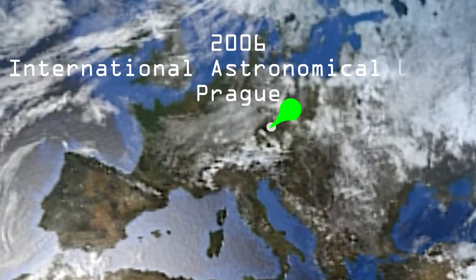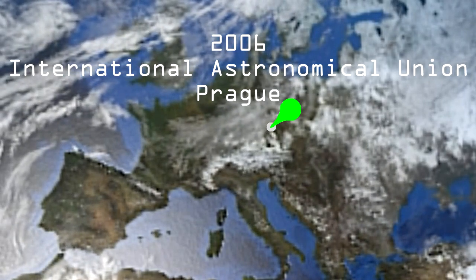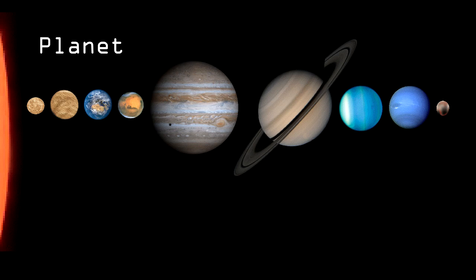In 2006, the International Astronomical Union, the IAU, convened to decide just what the definition of a planet should be. The final decision was that a planet should meet three criteria.